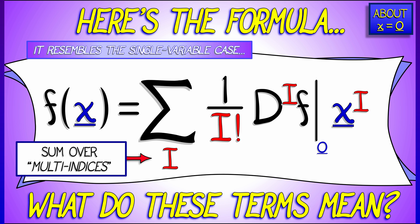What is that sum over? What's that capital I? That's something called a multi-index. That's what we're going to work towards next.